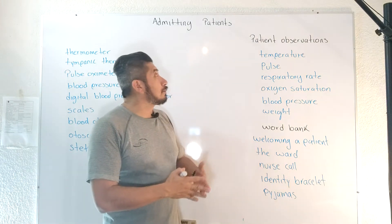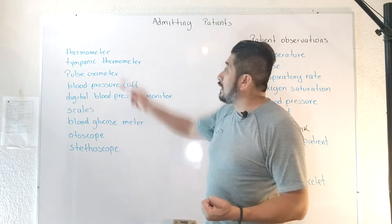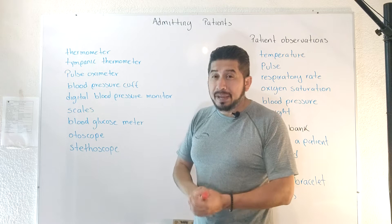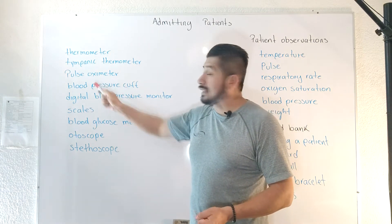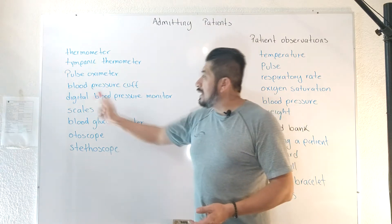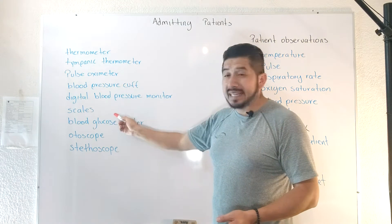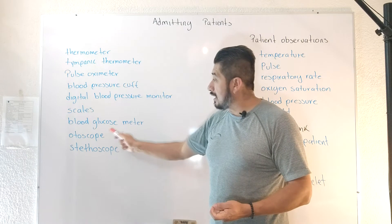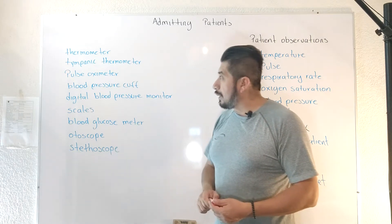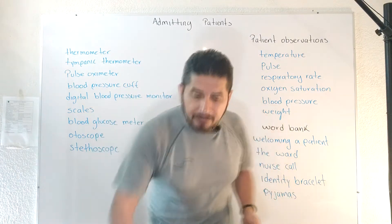To do the patient observations, we need some devices. For example, for taking temperature you need a thermometer, or you can use a tympanic thermometer. We also have the pulse oximeter, blood pressure cuff, digital blood pressure monitor, scales, blood glucose meter, otoscope, and stethoscope. These are common devices that you need to do your patient observations.